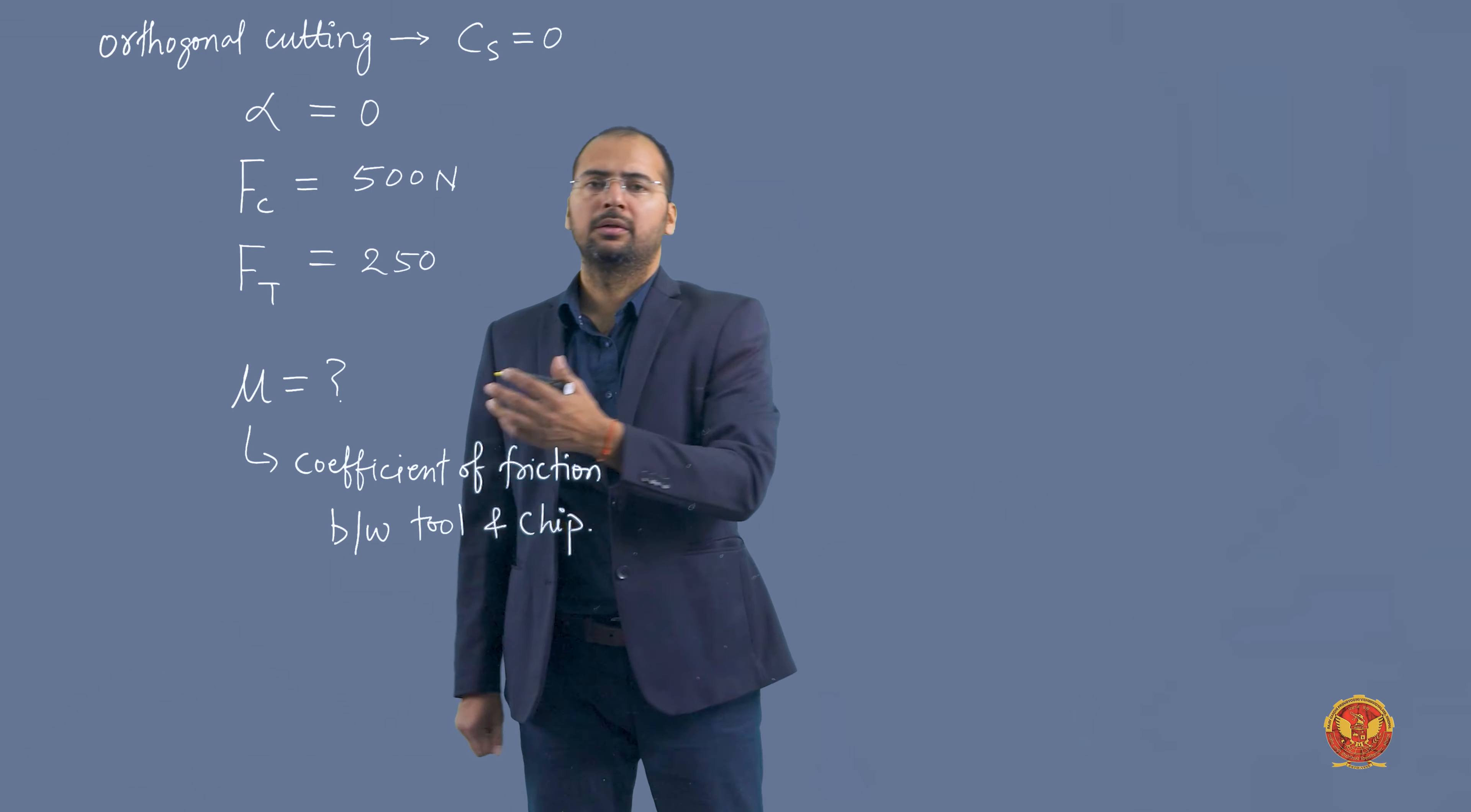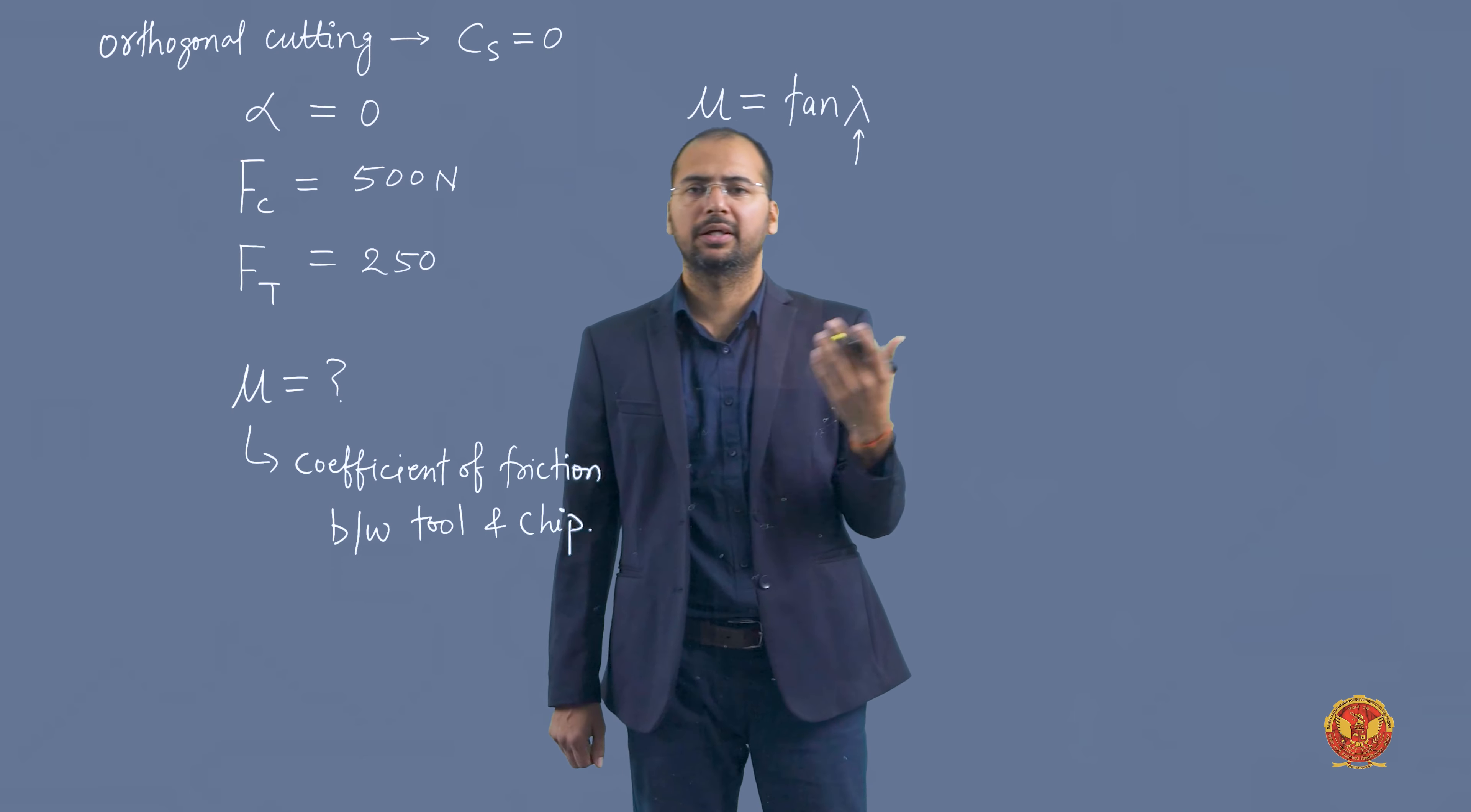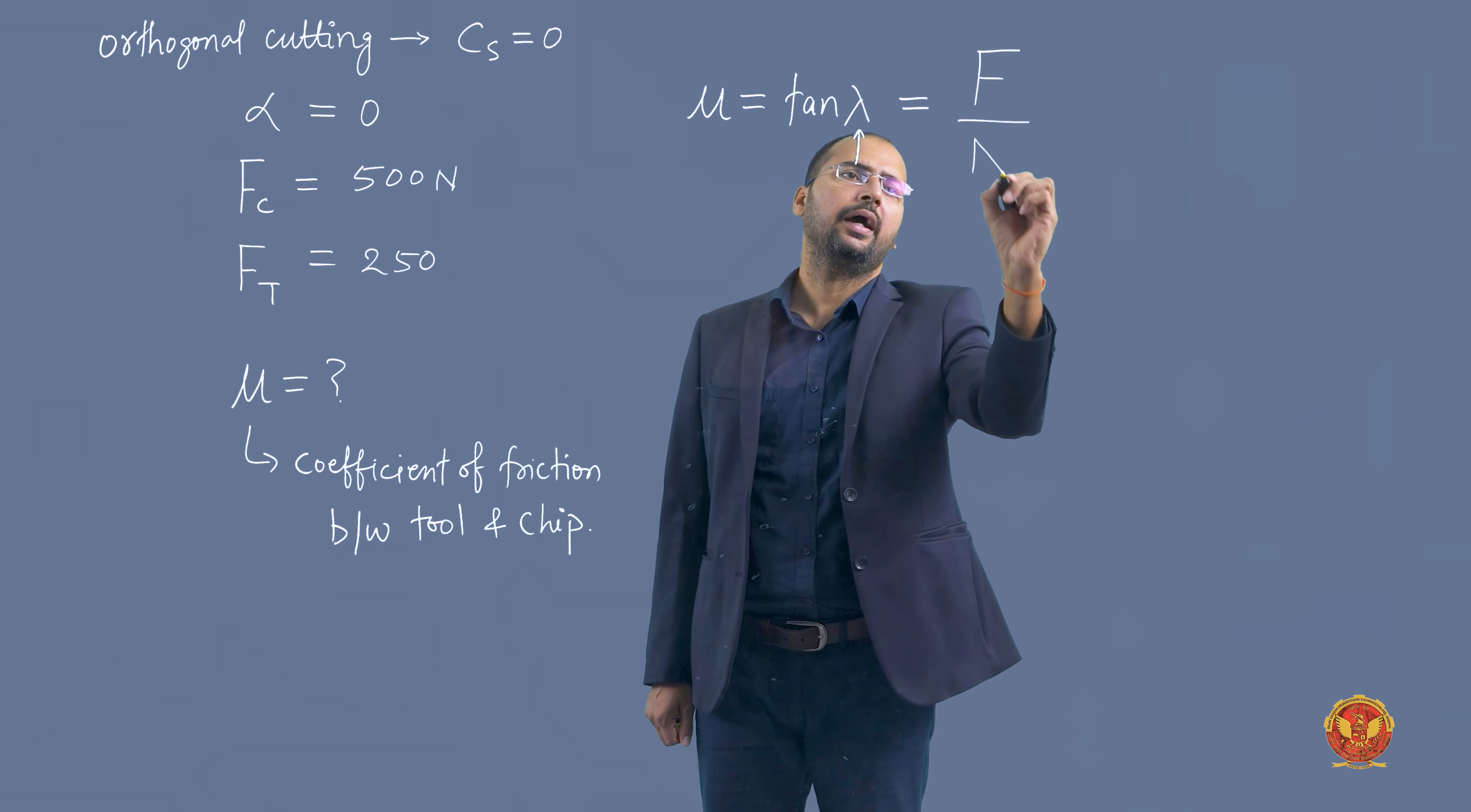According to merchant circle, the coefficient of friction mu equals tan lambda. Lambda is the friction angle. If the question asked for friction angle, we could easily calculate it as tan inverse mu. Tan lambda equals f divided by n.